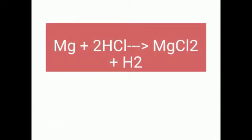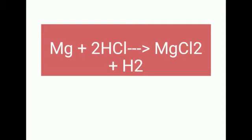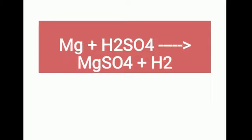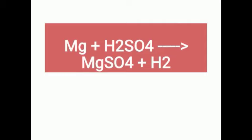Magnesium strong acids کے ساتھ بھی اچھا reaction دکھاتا ہے۔ Generally جب metals acids کے ساتھ react کرتی ہیں تو hydrogen gas اور salts produce ہوتے ہیں۔ HCl ایک strong acid ہے — جب magnesium HCl سے react کرے گا تو magnesium chloride (MgCl₂) salt بنے گا اور hydrogen gas liberated ہوگی۔ اسی طرح magnesium جب sulfuric acid کے ساتھ react کرے گا تو magnesium sulfate (MgSO₄) salt اور hydrogen gas produce ہوگی۔ یاد رکھیں کہ جن compounds کے end پر SO₄ یا chlorides ہوں وہ nature میں neutral salts ہوتے ہیں۔